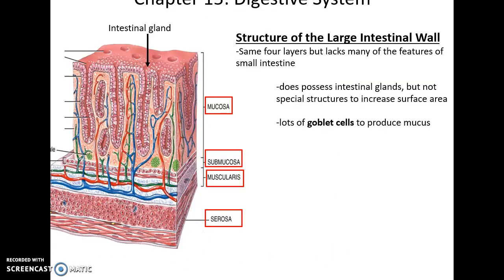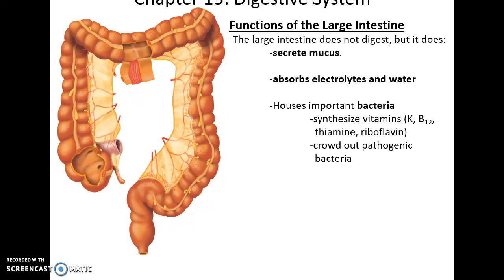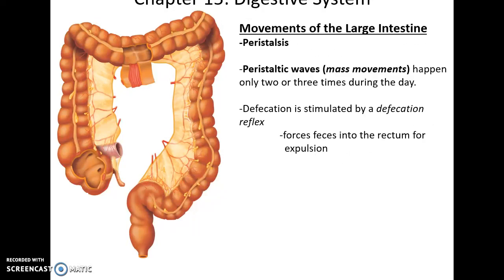Structures within the wall of the large intestine are pretty much as expected. We have the mucosa with little intestinal glands that help to produce a little bit more fluid, but especially mucus, to help materials move along. Submucosa, muscularis, and serosa are all as expected. There is a strip of smooth muscle tissue that runs longitudinally along the large intestine called the teniae coli. It is constantly contracting a little bit, and this is what forms the little pouches you see in the large intestine. These pouches are called one haustrum, many haustra. The large intestine does not do digestion, but it does secrete mucus, absorb electrolytes and water, and houses lots of bacteria — our natural microbiome. These bacteria are often useful because they crowd out pathogenic bacteria so we don't get sick, and also synthesize some vitamins — vitamin K, B12, etc.